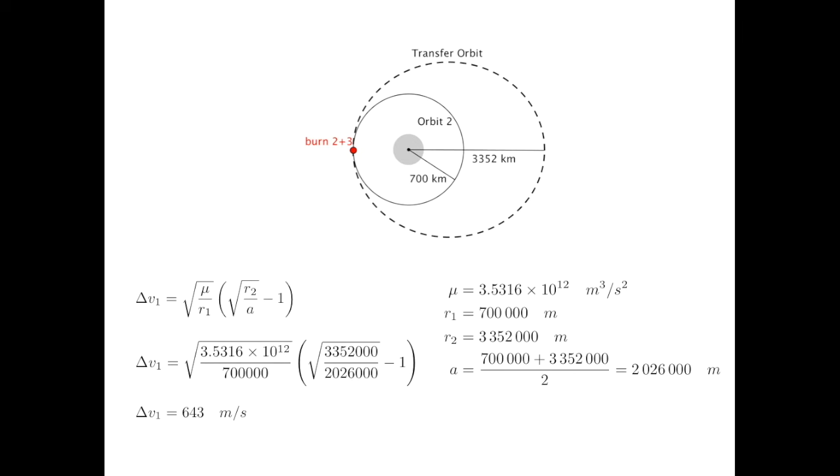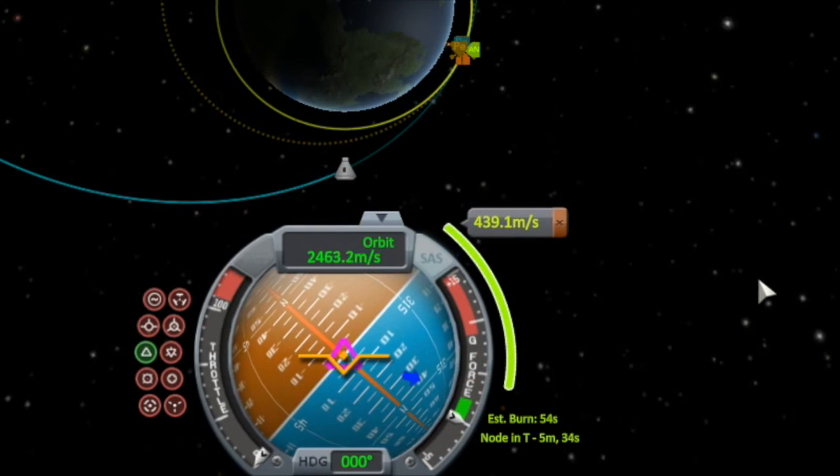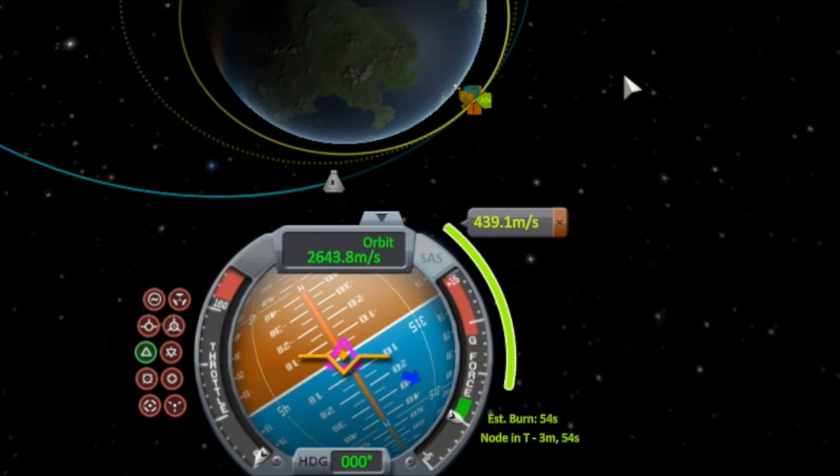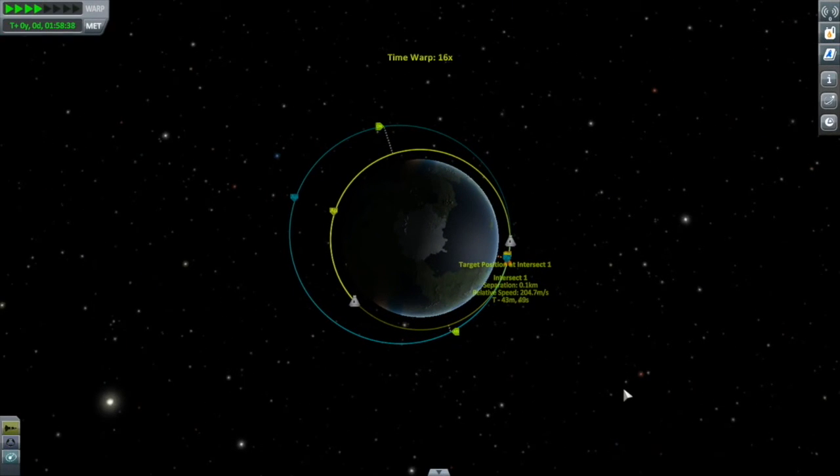Let's compare this to what actually happened. Now I did use a maneuver node for the first part of this burn and we can see here that the amount of that burn was 439 meters per second. The second part of the burn was actually done in a series of short burns as rescue 2 matched velocities with Jebediah.